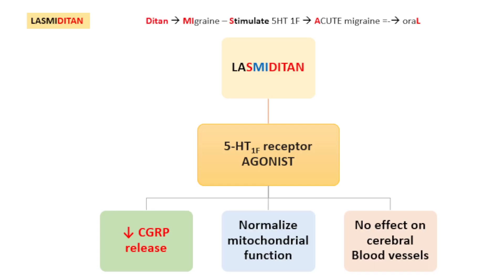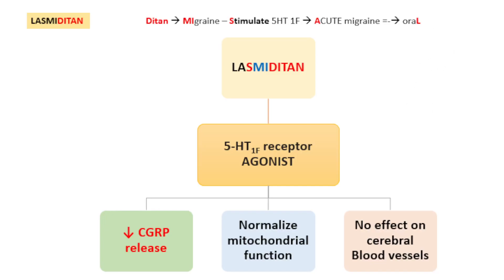Here is how to remember lasmiditan using a mnemonic. 'LASMIDITAN' — reading backward: L stands for oral (oral ends with L), A stands for acute migraine, S stands for stimulates the 5HT1F receptors, MI stands for migraine. This is how you can remember lasmiditan, which is a newer drug used to treat migraine. Thank you.